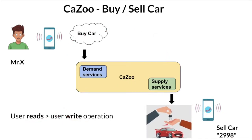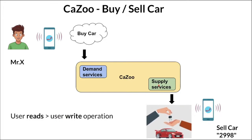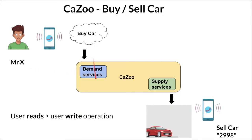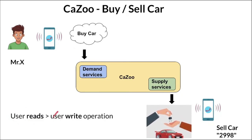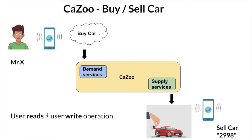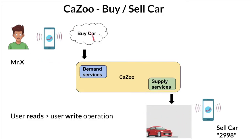User read operations will be more than user write operations. For example, in a day maybe 50 sellers will register to the system, whereas buyers could number in the hundreds of thousands searching for cars. Since user read operations are much more than write operations, we might have to scale the read-related operations. The demand services may need to be scaled, while supply services can have a little less computing power.